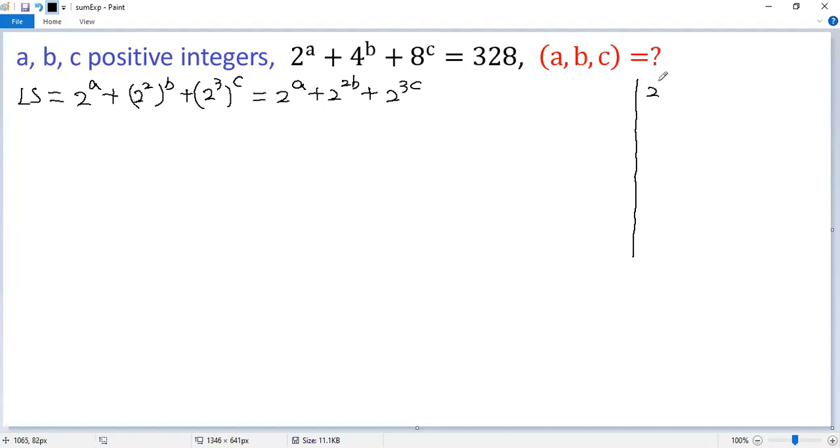So we know 2 cubed equals 8, 2 to the power of 4 is 16, 2 to the power of 5 is 32, 2 to the power of 6 is 64, 2 to the power of 7 is 128, and 2 to the power of 8 is 256.